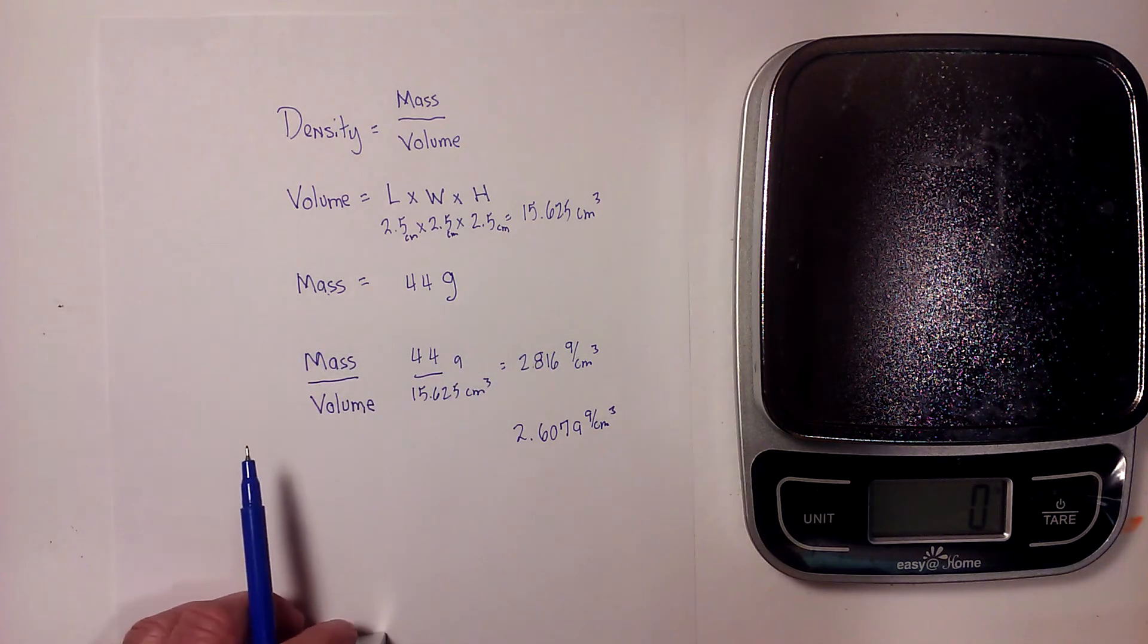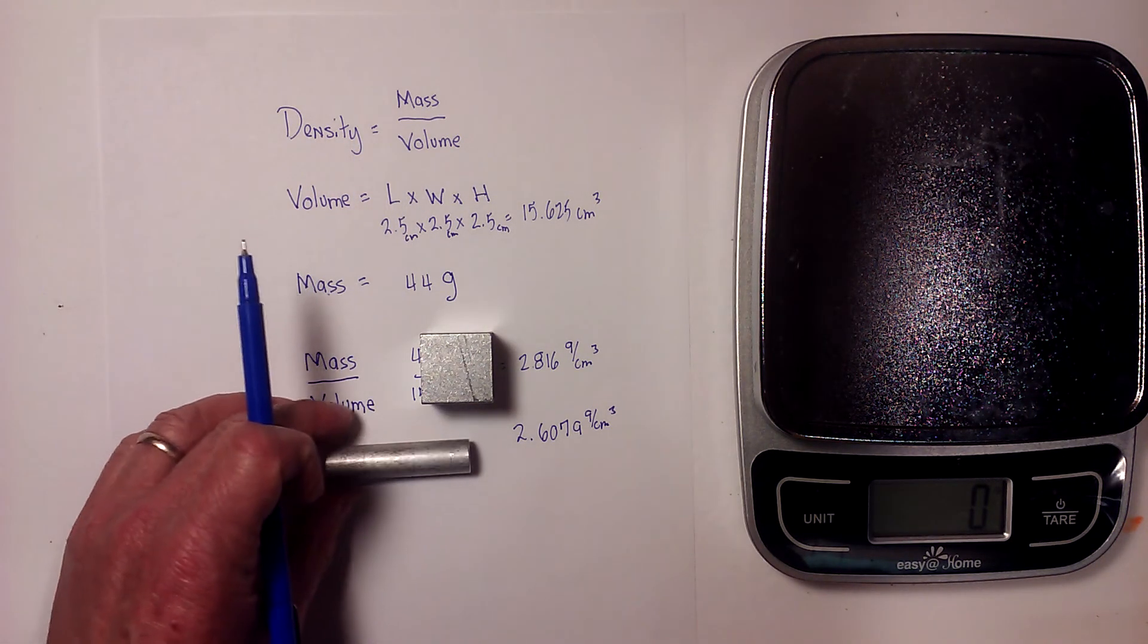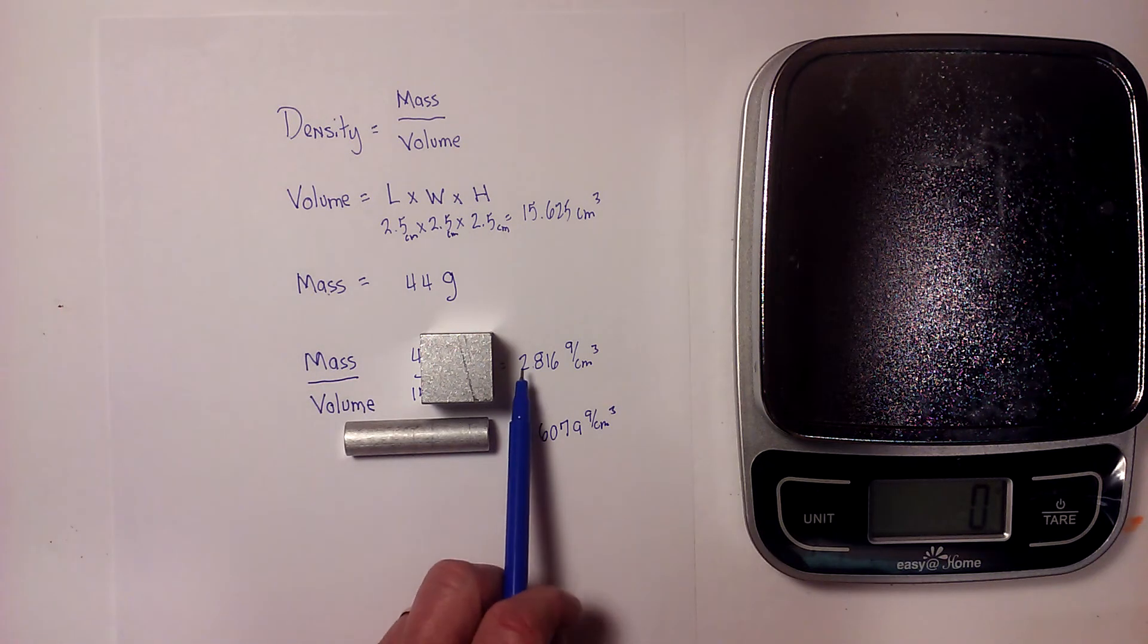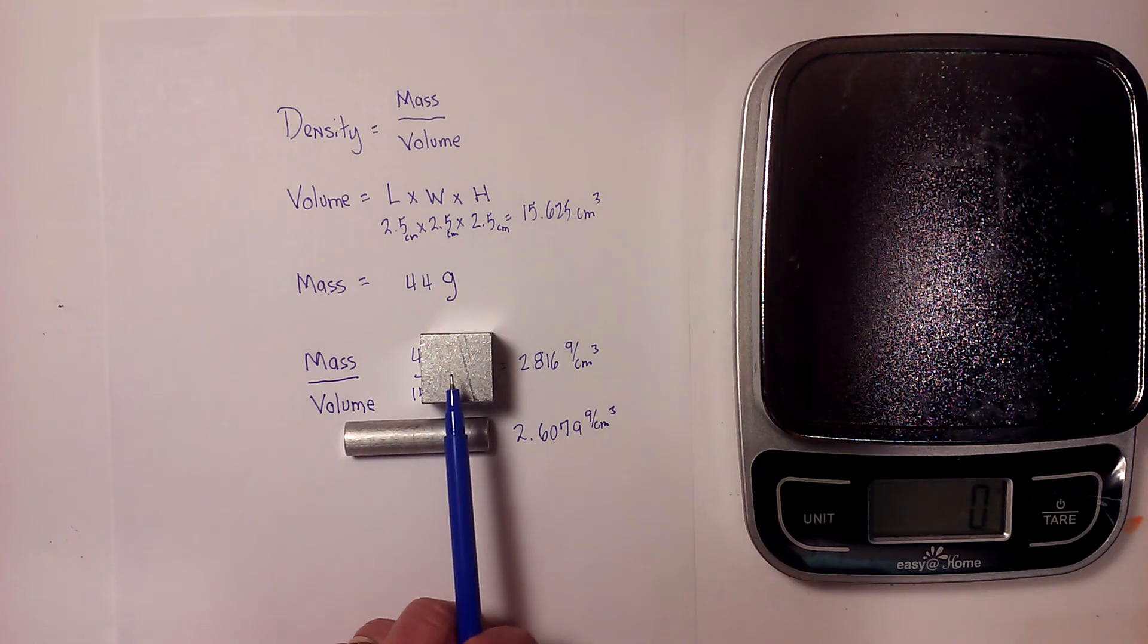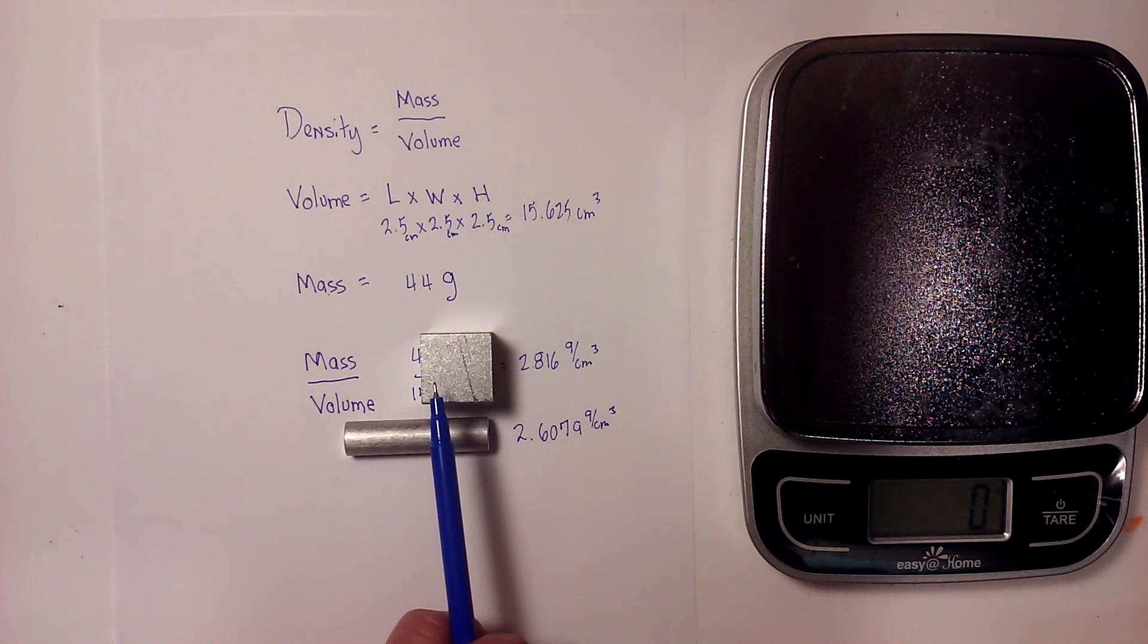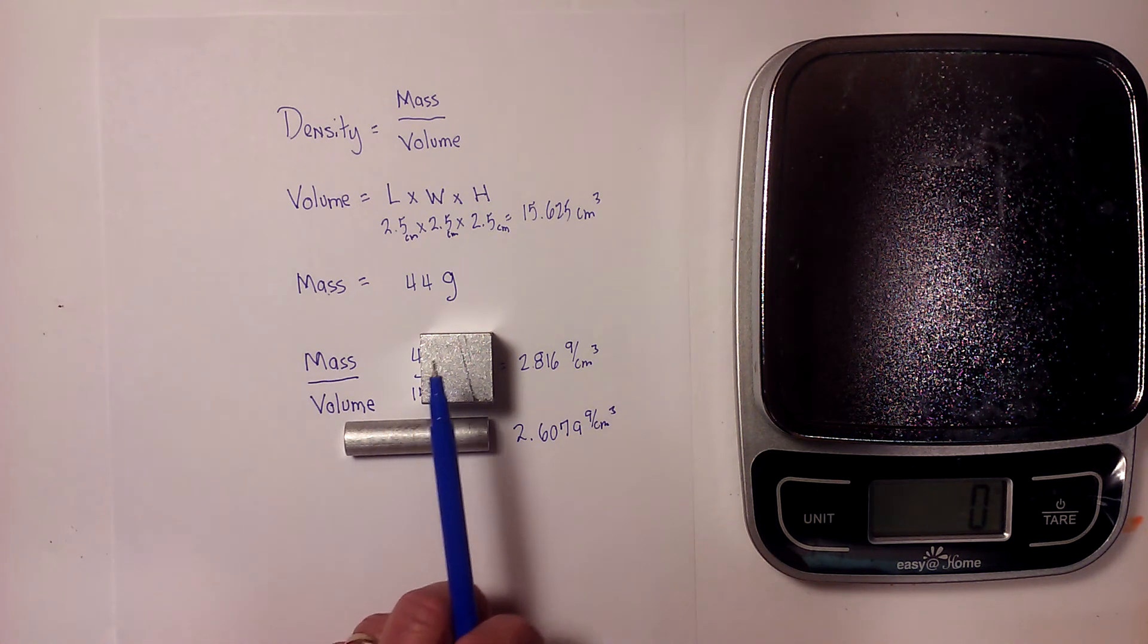Okay, so now I'll place the block by the density that we calculated for that, and here is the density for the cylinder. You can see they're pretty close. Also, all aluminum does not have the exact density; there are different types or alloys.